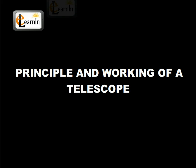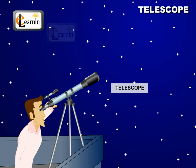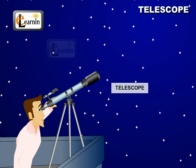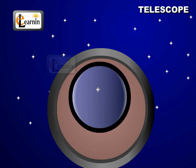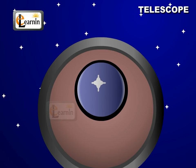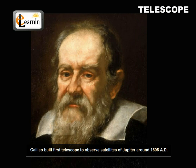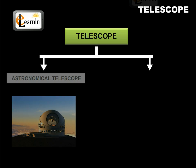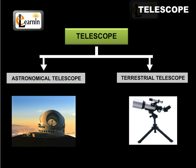Principle and working of a telescope. A telescope is an optical instrument used to see distant objects. In telescopes, the magnification factor is not very important, however telescopes may also have magnifying power. Galileo built the first telescope to observe the satellites of Jupiter around 1608 AD. Telescopes are of two types: one, astronomical telescopes, and two, terrestrial telescopes.